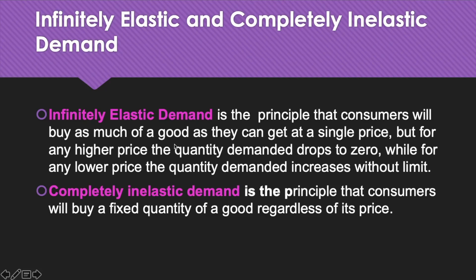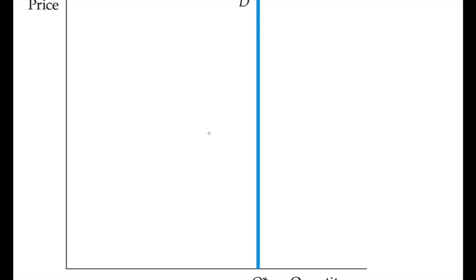A completely inelastic demand curve reflects the principle that consumers will buy a fixed quantity of a good regardless of its price — they will always buy that fixed quantity no matter what the market price is. This is a vertical demand curve where ΔQ/ΔP is zero. Because quantity demanded is the same no matter what the price is, the elasticity of demand is zero. An example is any life-saving prescription drug — the quantity demanded remains the same when price increases or decreases, and consumers are completely unresponsive to price changes.